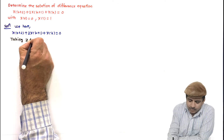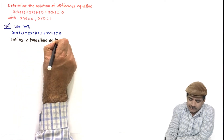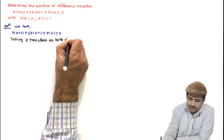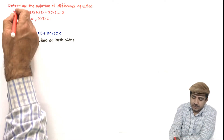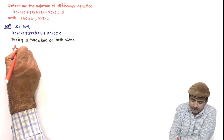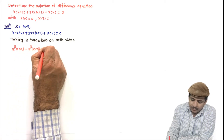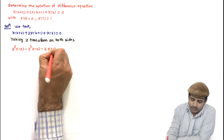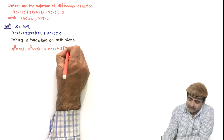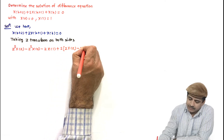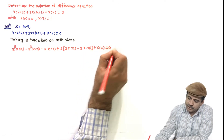First step: taking Z transform on both sides, we get z²·X(z) − z²·x(0) − z·x(1) + 2[z·X(z) − z·x(0)] + X(z) = 0. This is the Z transform applied to both sides of the difference equation.